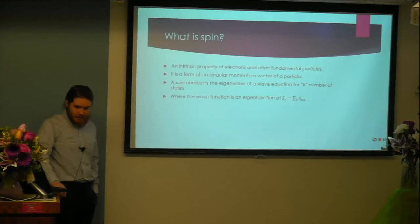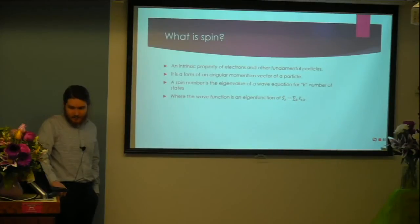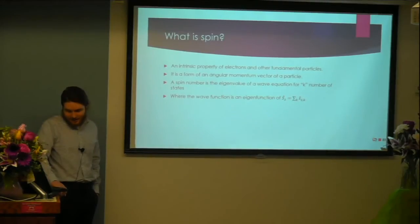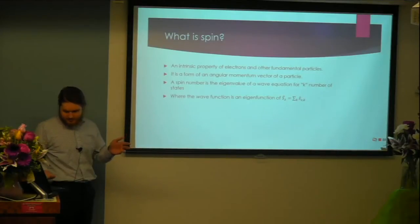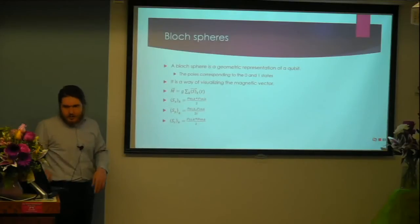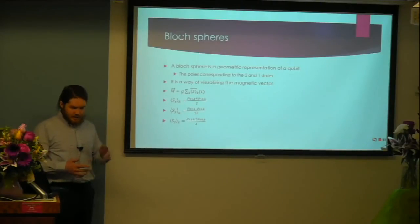Specifically, the spin number of an electron is the eigenvalue of a wave equation for the k number of states, where the wave function is an eigenfunction of s-hat-z for the summation of k terms of s-hat-z-k. That would be the z value for a vector of magnetization, basically.